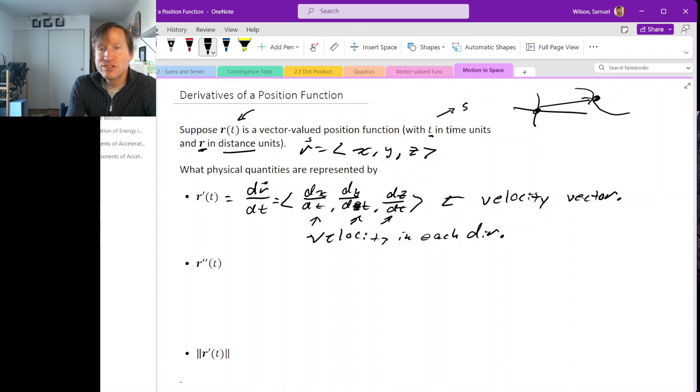Notice that the units work out because in the x-coordinate direction, dx is going to be in meters because x is in meters, or distance units, whatever the distance units happen to be. And this dt is in seconds, and so the derivative is in meters per second, and that makes sense for a velocity.